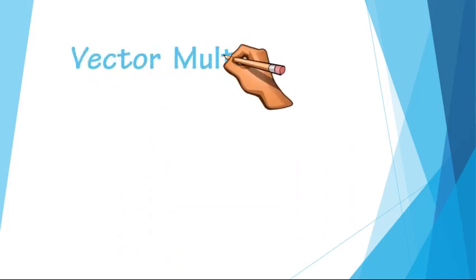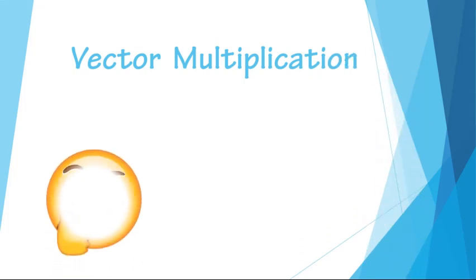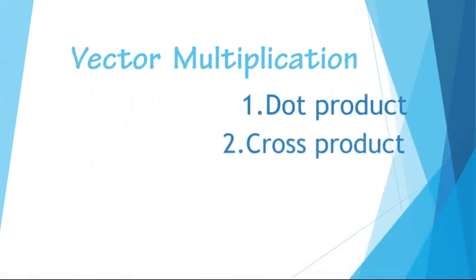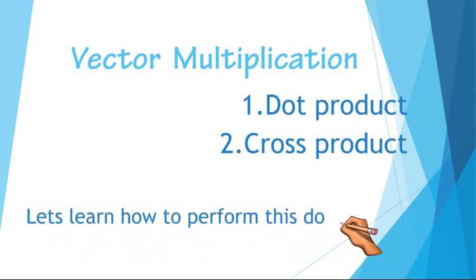Vector multiplication: today we will discuss vector multiplications. We can multiply two vectors in two different ways. The first one is dot product and another one is cross product. In this video, we will discuss dot product.